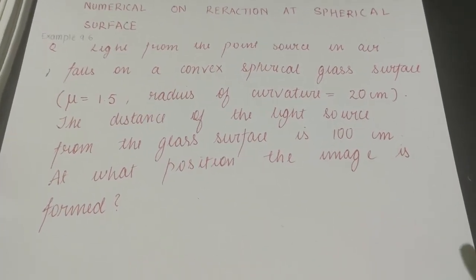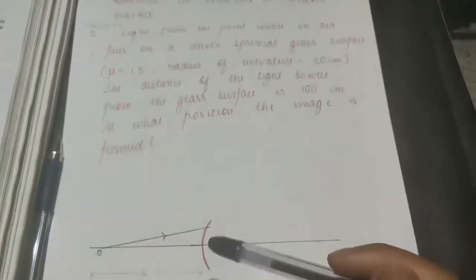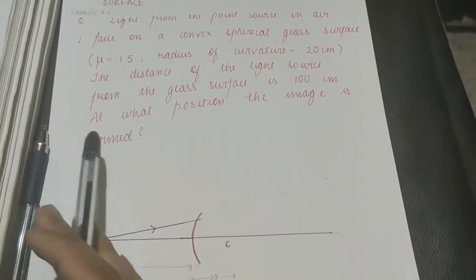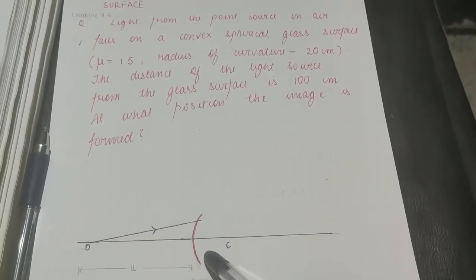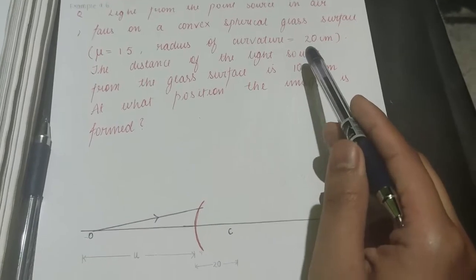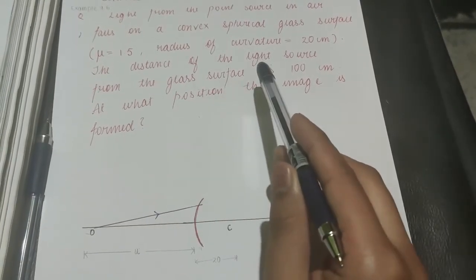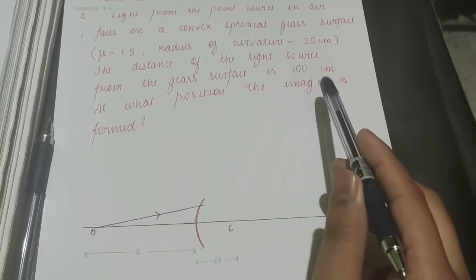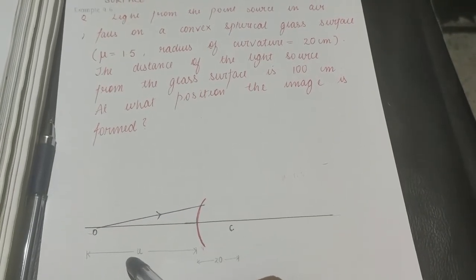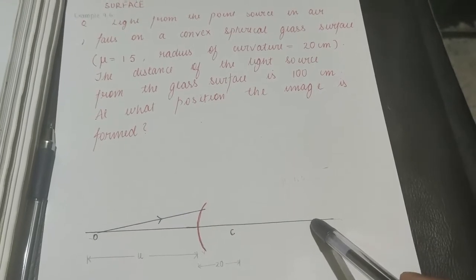Let us understand the question. A light from the point source is in air, so the first medium is air. It falls on a convex spherical glass surface of refractive index 1.5 and radius of curvature 20 centimeters. The distance of the light source from the glass surface is 100 centimeters. The question asks at what distance the image will be formed.